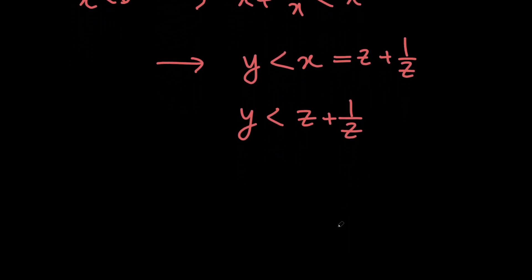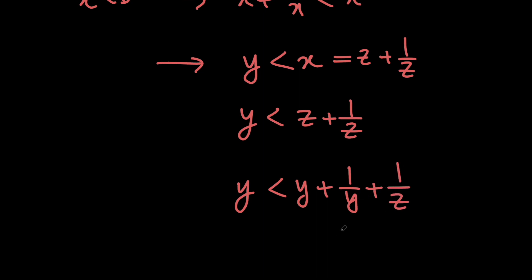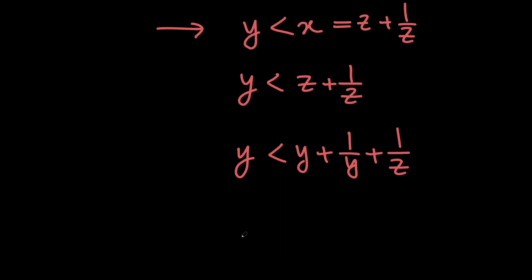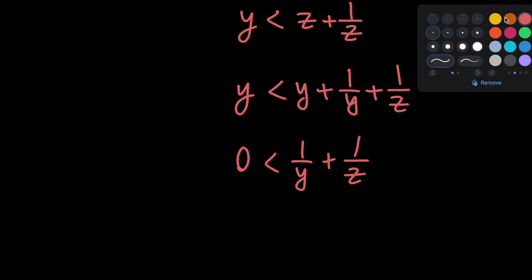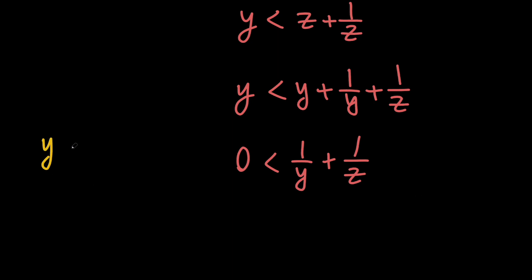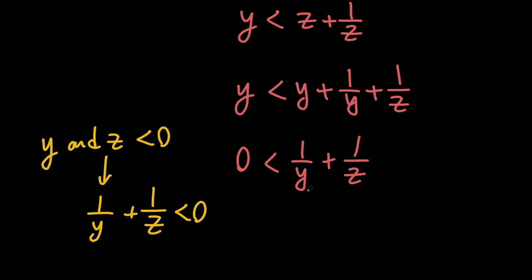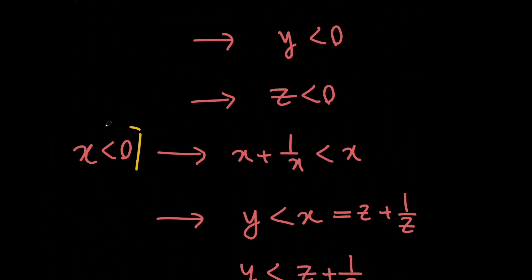Since z is y plus 1 over y, we have y is less than y plus 1 over y plus 1 over z. Subtracting y from both sides gives 0 is less than 1 over y plus 1 over z. But both y and z are negative, so 1 over y plus 1 over z must be negative, not positive. So this is impossible — there is no solution whenever x is negative.